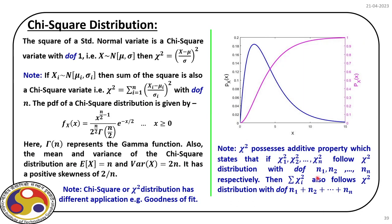Our first topic is the chi-square test. Let us first review what chi-square distribution is. The square of a standard normal variate is a chi-square variate with degrees of freedom 1. If x follows a normal distribution with mean μ and standard deviation σ, then χ² = ((x - μ)/σ)² has degrees of freedom 1.